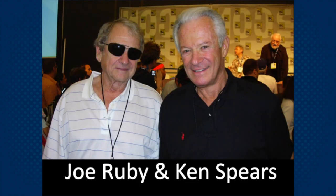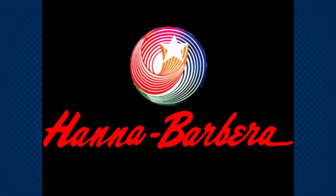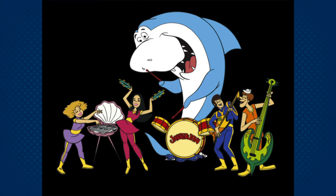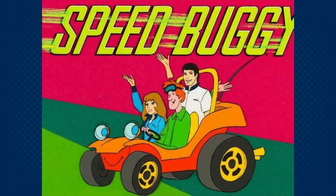The show was created by the animation team of Joe Ruby and Ken Spears, who gained fame working for Hanna-Barbera Productions and being the creative forces behind cultural icon Scooby Doo. Much of the Ruby Spears produced shows followed the Scooby Doo formula of a title mascot character and a group of teenagers. This is seen in Scooby Doo and Jabberjaw, but also other shows like Captain Caveman and Speed Buggy.